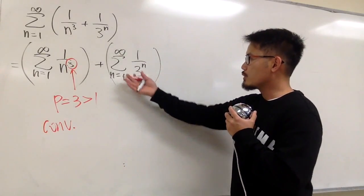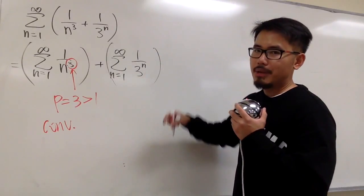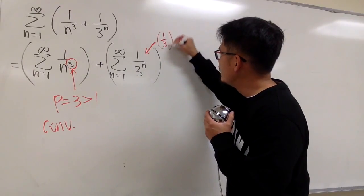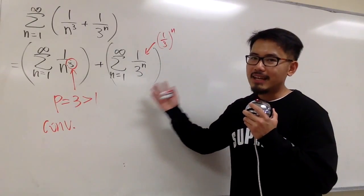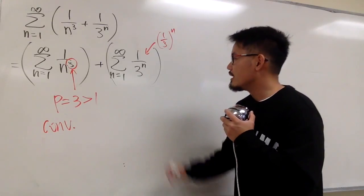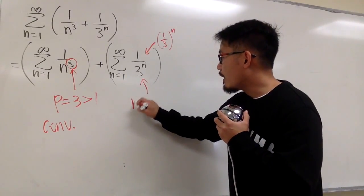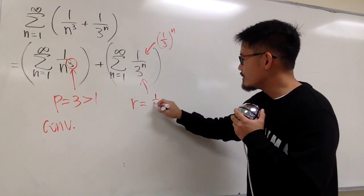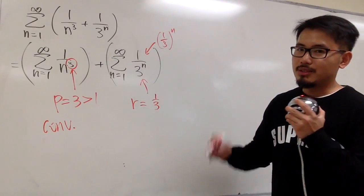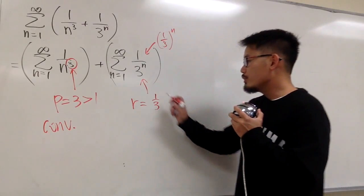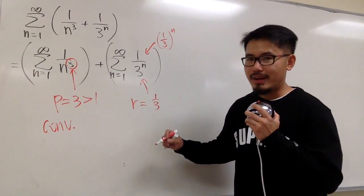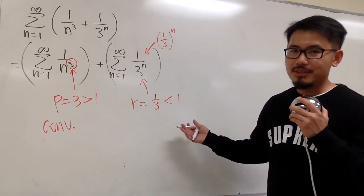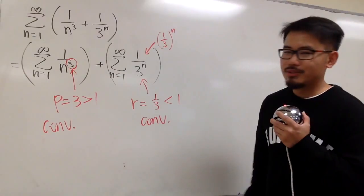How about the second one? We have 1 over 3 to the nth power. We know this is 1 over 3 to the nth power, and this is actually a geometric series. So for this one, r is 1 over 3. In the geometric series situation, you want to make sure the absolute value of r is less than 1. We have 1 third, which is less than 1. So this also converges.